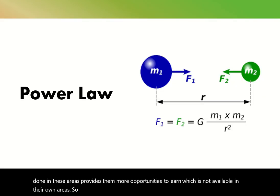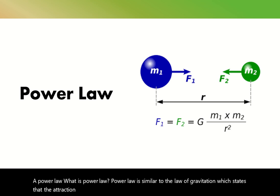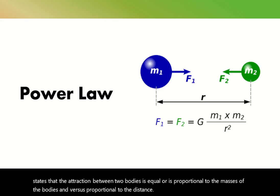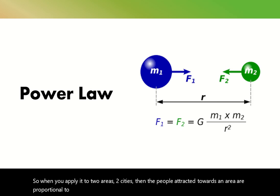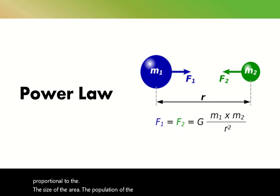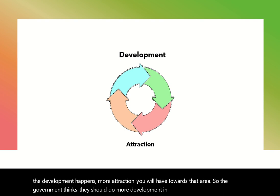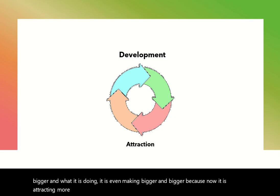To solve this problem we will apply a power law. Power law is similar to the law of gravitation, which states that the attraction between two bodies is proportional to the masses of the bodies and inversely proportional to the distance. When you apply it to two areas, two cities or countries, the people attracted towards an area are proportional to the size of the area, the population, and the development in that area. The more development that happens, the more attraction towards that area. So the government thinks they should do more development in the metropolitan area, but this makes it bigger and bigger, attracting even more people, which increases the informal settlements.